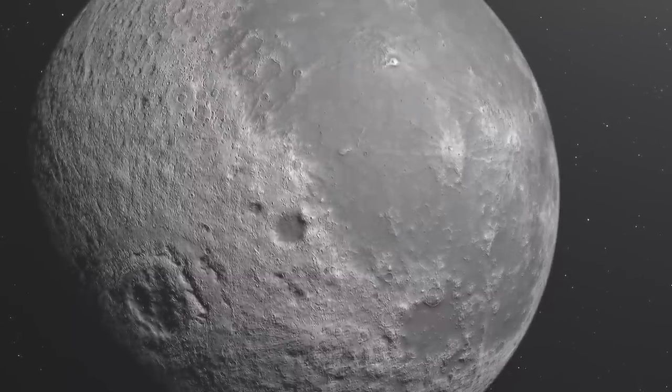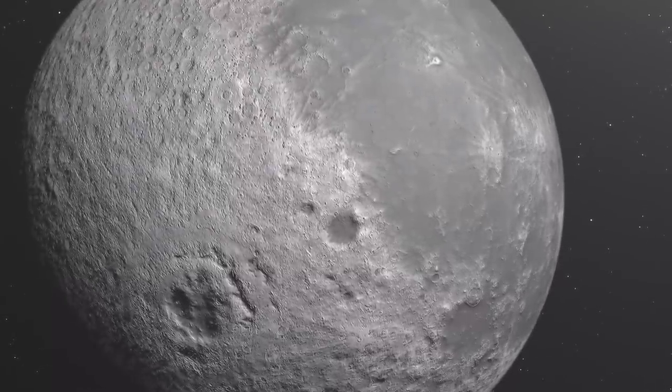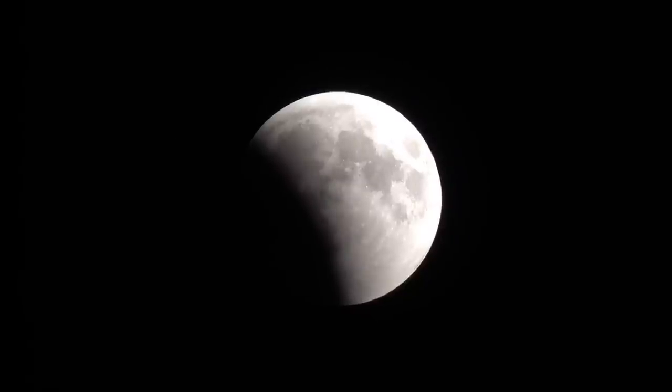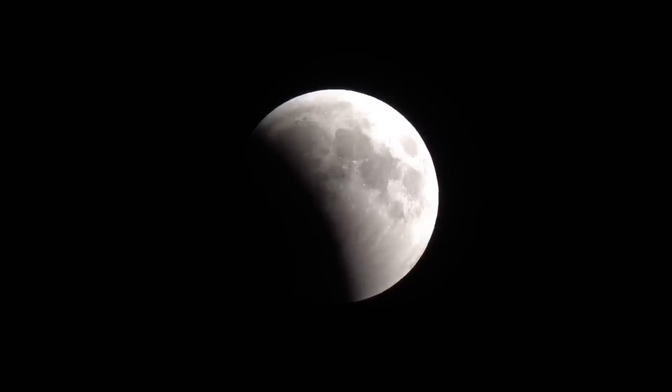Thus, when the Earth is perfectly aligned between the Sun and the Moon, the Moon is in the Earth's shadow. This is called a lunar eclipse. In addition, the Moon can take on an orange-red color when the Sun's rays pass through the Earth's atmosphere.